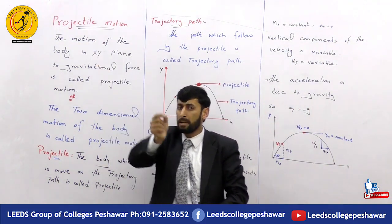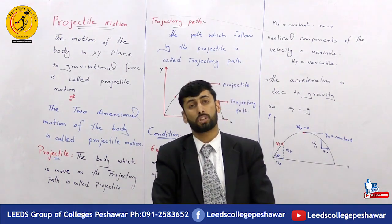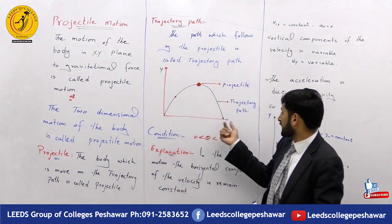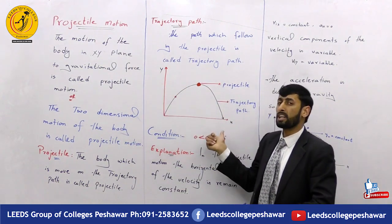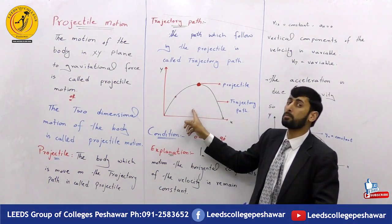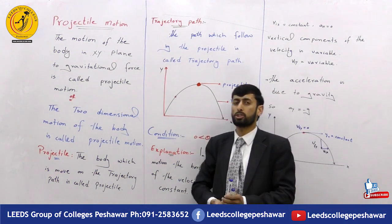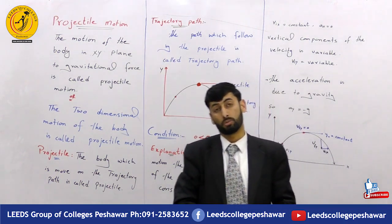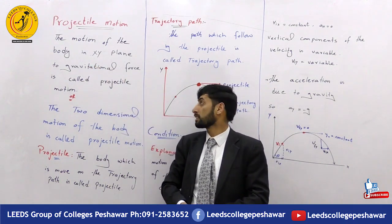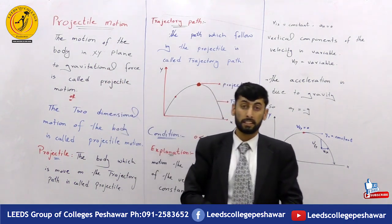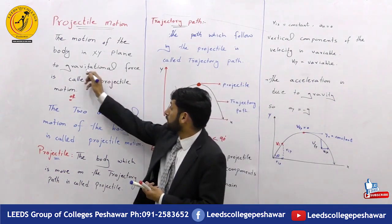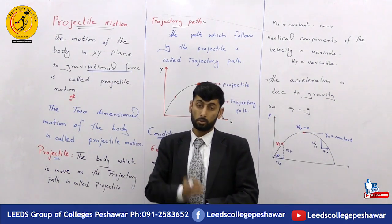Projectile motion is a two-dimensional motion. In two dimensions, we represent the coordinates as x and y. The definition: the study of the motion of a body in the x-y plane due to gravitational force is called projectile motion.